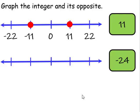Let's take a look at negative 24. We want to graph negative 24 and its opposite. So we'll graph 0, which divides the number line into the positive side and the negative side.